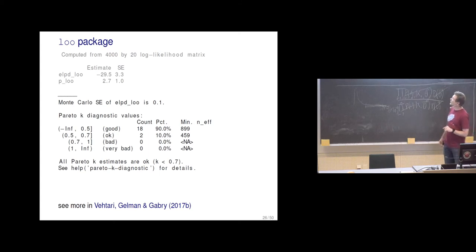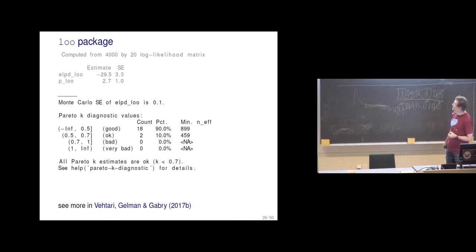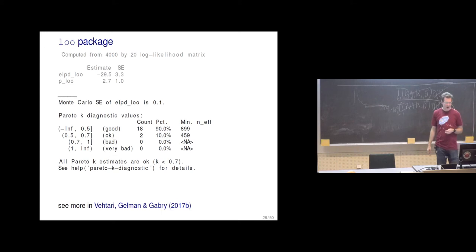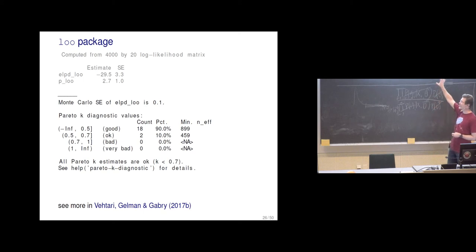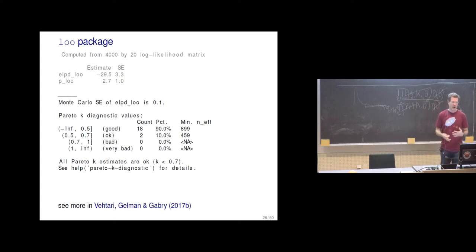Last time I explained how to compute the ELPD-LOO — what the meaning of ELPD-LOO is if we do refits every time — and described what p-LOO is. Now we have the Pareto k̂ diagnostics and minimum effective sample sizes, and based on these we can also compute the Monte Carlo standard error for ELPD-LOO. In this case the error is very small compared to the overall uncertainty we have from only having 20 observations, which makes the future look uncertain.